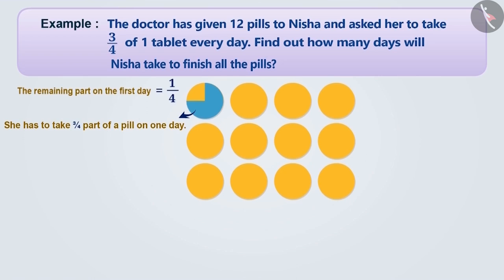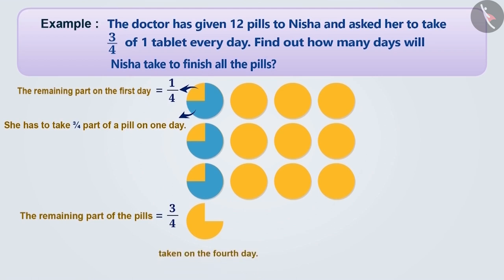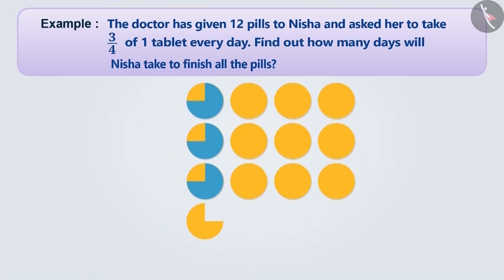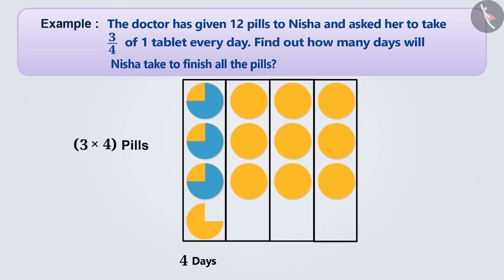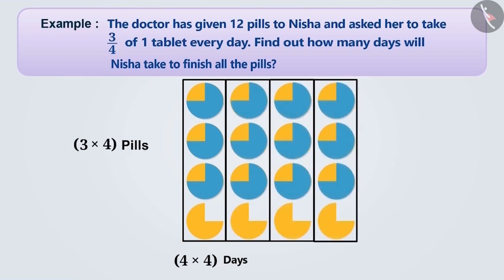On the first day, consuming 3 by 4 parts of the tablet will save her 1 fourth part. Similarly, on the second and third day, after taking 3 fourths of the tablet, 1 fourth part will be saved. If we add the remaining parts, we will get 3 fourths of the pill, which Nisha can take on the fourth day. In this way, Nisha will be able to take 3 pills in 4 days. Thus, Nisha will be able to take 12 pills in 16 days. So, the answer to the given question is 16 days.